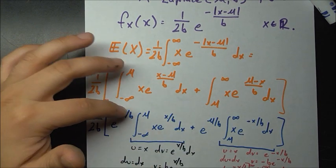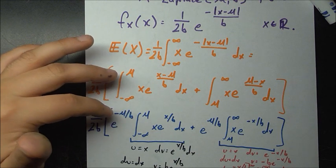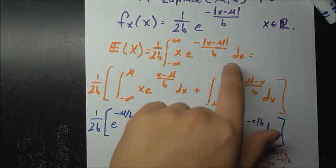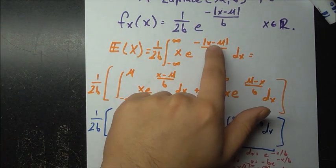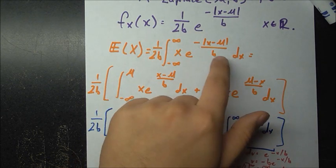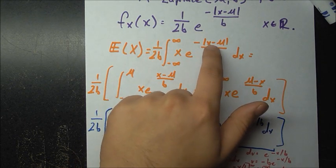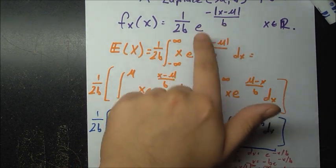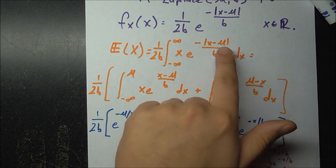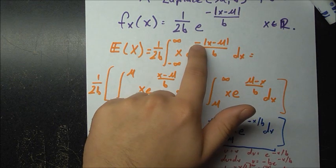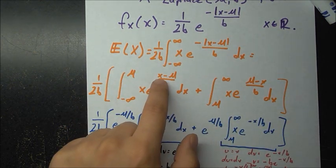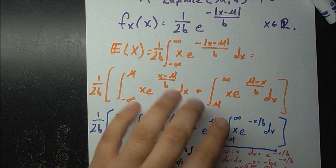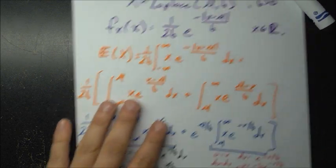In the region where x is less than mu, the absolute values need to flip x minus mu to mu minus x. But then this negative in the exponent reverts it back, so it is actually still x minus mu over b. So that part is taken care of.